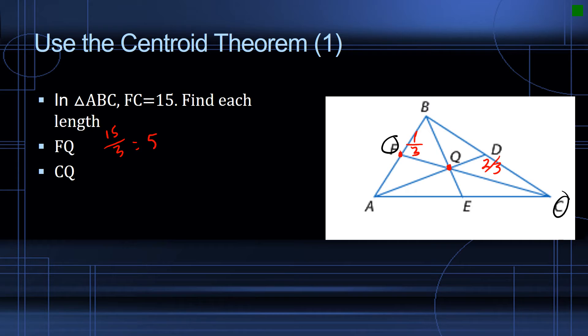CQ would be from the vertex to the centroid, and that's two-thirds, so we've got 15 times two-thirds. Three goes into 15 five times, and five times two is equal to 10. FQ equaling five and CQ equaling 10 gives us 15.